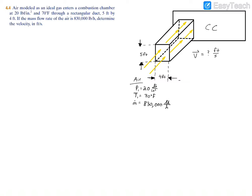To find this velocity, we're going to use the relation: velocity equals mass flow rate times specific volume divided by area. The mass flow rate is given to us and the area can be easily calculated since we have the width and height; however, the specific volume is what we need to solve for.